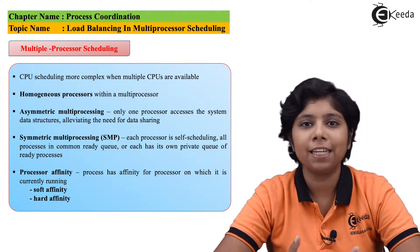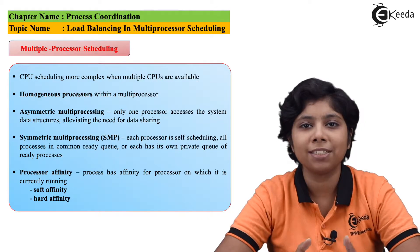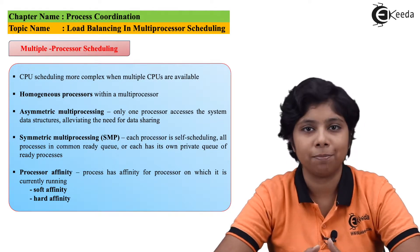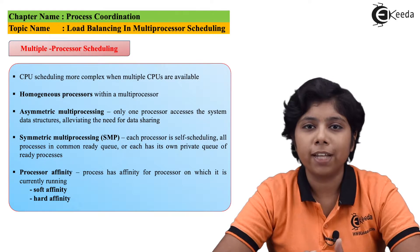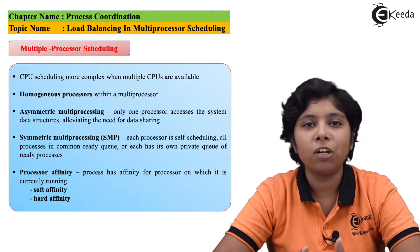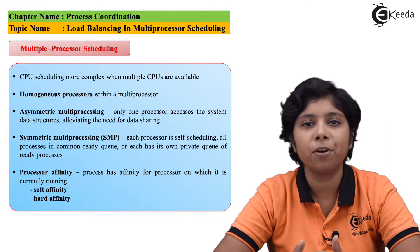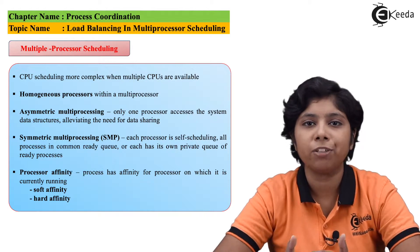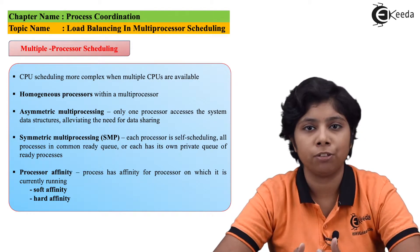Load balancing evenly distributes all the workload between the processors in a system. It is important to note that load balancing is often necessary only in systems where each processor has its own private ready queue of processes to execute.